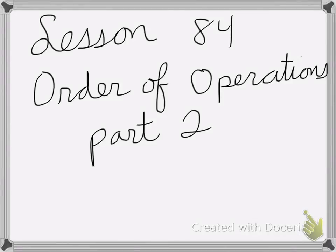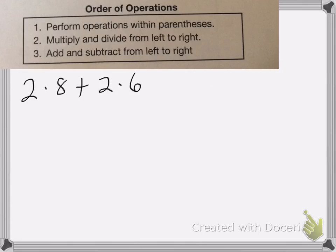All right, so lesson 84 is on order of operations part two. So here we have the order of operations. First, we perform operations within parentheses, then we multiply and divide from left to right, and we add and subtract from left to right.